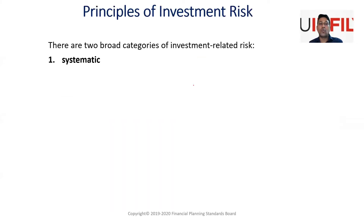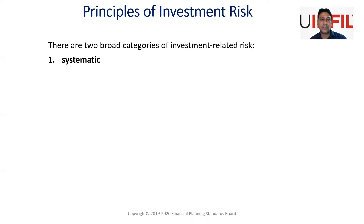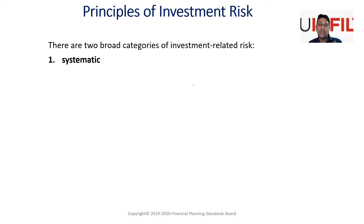There are two broad categories of investment-related risk. Number one is systematic risk. Systematic risk is a risk which basically impacts the overall economy. Taking an example from the recent past — due to coronavirus in March 2020, all world markets were down. The Indian stock market, Nifty, had a record one-day fall. Dow Jones and every market was down across every industry and company. This was systematic risk impacting the overall economy. Systematic risk cannot be reduced, diversified, or eliminated — it is macro in nature.